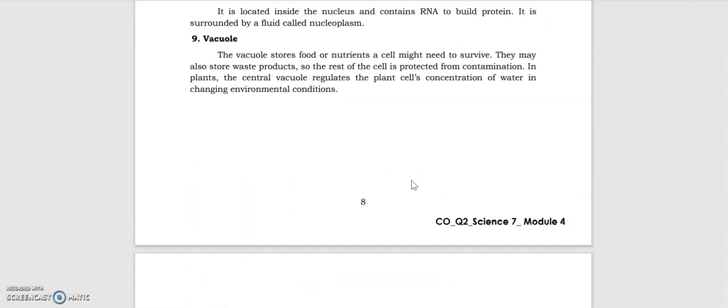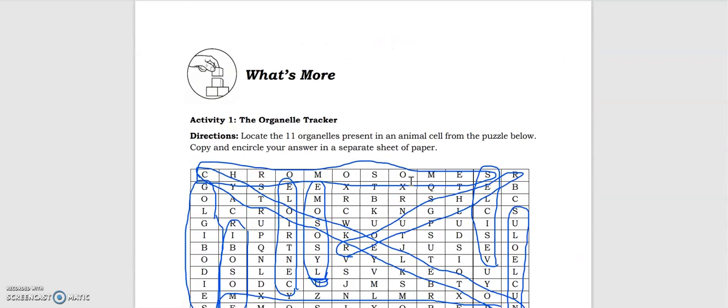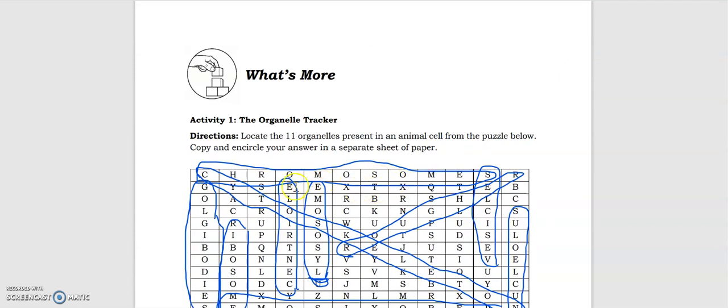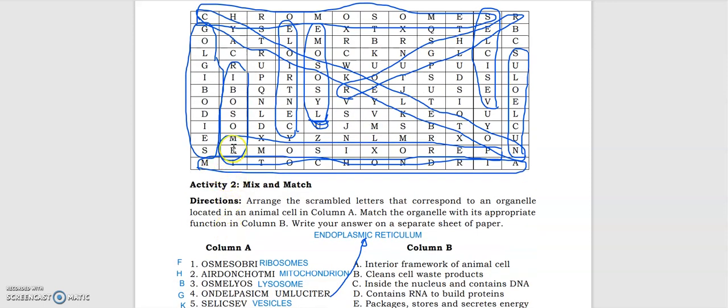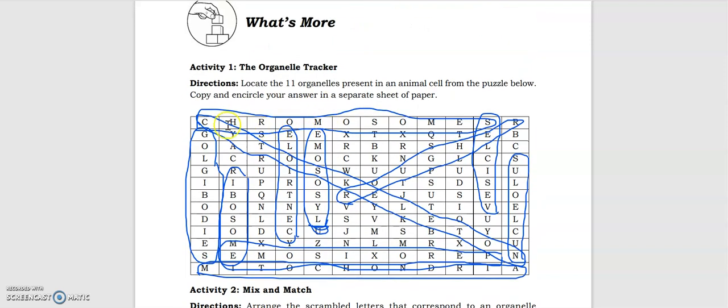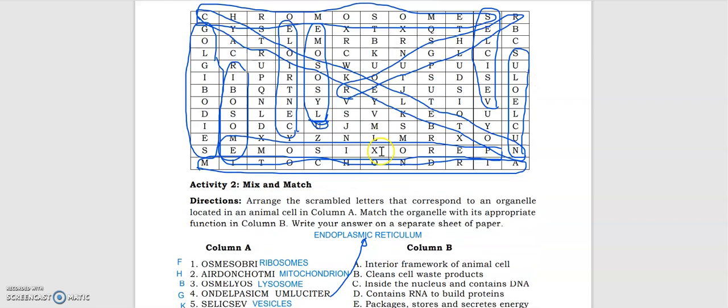Yes, and we have here the What's More portion: the 11 organelles. We have the chromosomes, Golgi bodies, ribosomes, peroxisomes, mitochondria, we have here the centrioles, the lysosomes, the chromosomes, rough ER, the vesicles, the nucleolus, and we have the cytoskeleton.